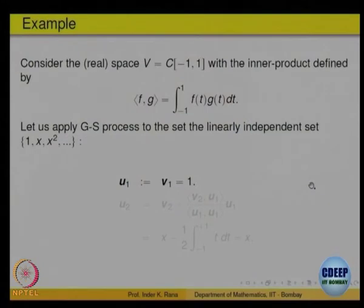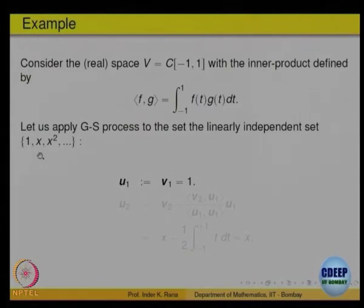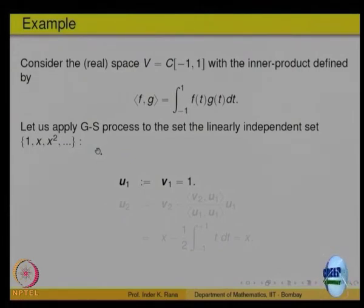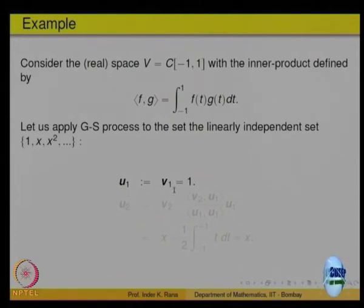Let us do one example — the same one we have been doing. Take C[-1,1], which is a vector space with inner product being the integral from -1 to 1 of f·g dx. We have the linearly independent set 1, x, x², and so on. For any space of polynomials, 1, x, x², ..., x^n is an independent set. So taking this infinite sequence, any finite number of them is linearly independent. We can apply the Gram-Schmidt process to this set.